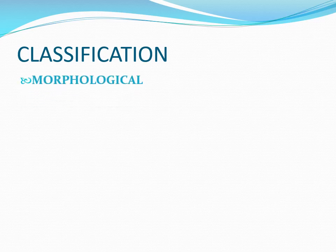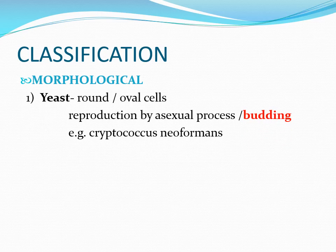Broadly, fungi exist in two forms: yeast-like or mold-like. In detail, there are four types. First are true yeasts — round or oval cells like Candida or Cryptococcus — that reproduce asexually by budding. Buds are easily visible on Gram staining. Cryptococcus neoformans is a classic example of a true yeast.